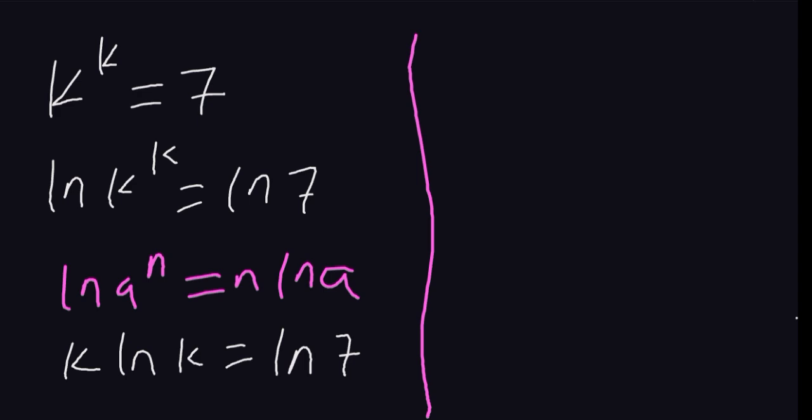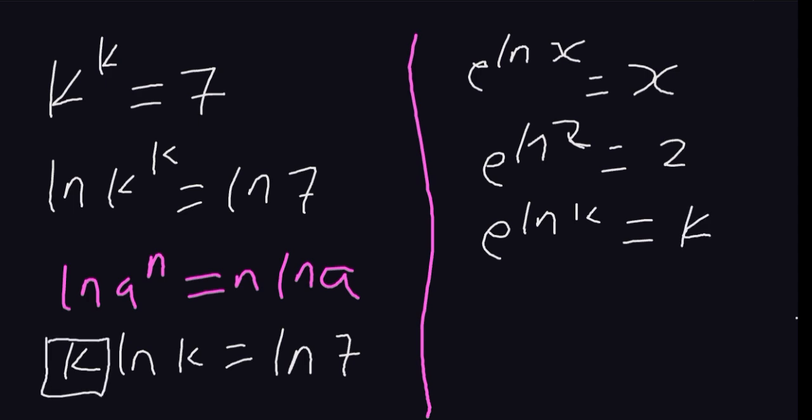From here, you notice that an exponent of the ln of a number is equal to that number. For example, e to the ln of 2 is the same as 2, meaning that e to the ln of k is the same as k. So we shall introduce an exponent here. Why are we introducing that exponent? We want this expression to be in the form of k exponent of k, so that if we apply Lambert W function, we shall end up with k.